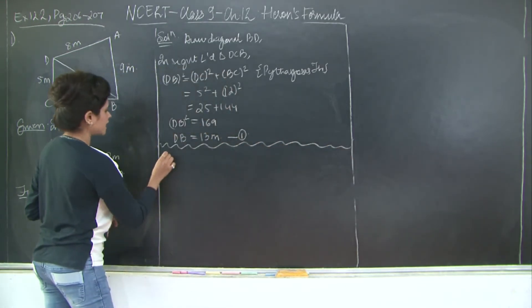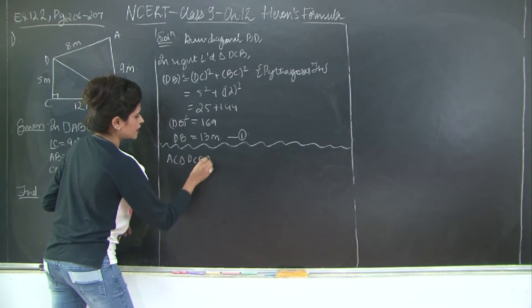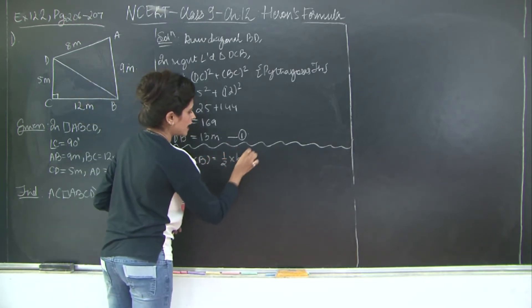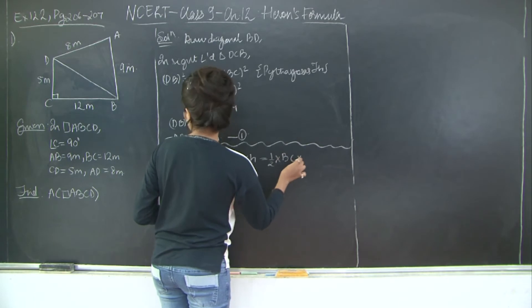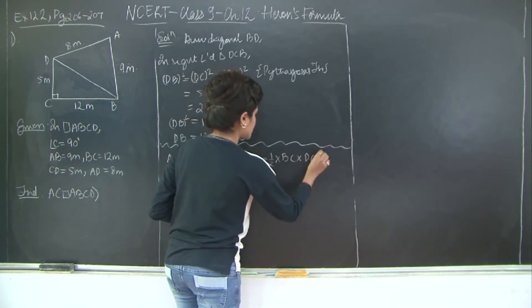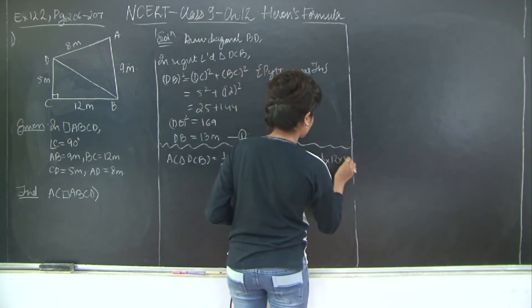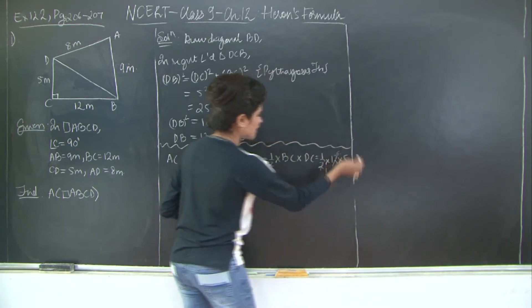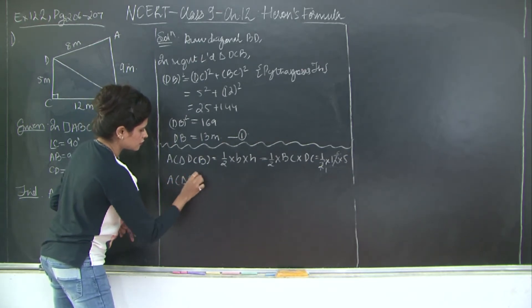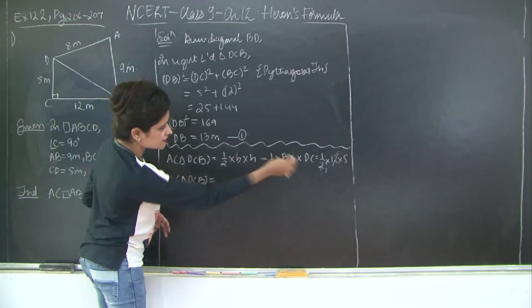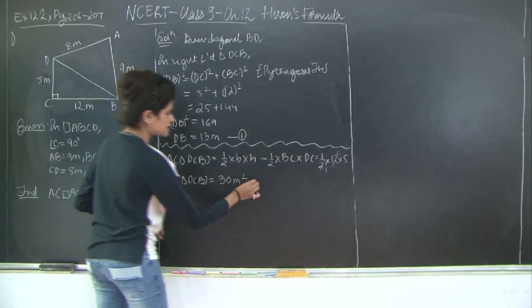Now we will find the area of triangle DCB. Area of triangle DCB is equal to half into base into height, so B into h for base and height respectively, which is half into base is DC into height which is BC. So which is half into base 12 and height is 5. So 2×6 are 12, 6×5 are 30. So your area of triangle DCB is equal to 30 meter square. I will mark this as Roman number 1.